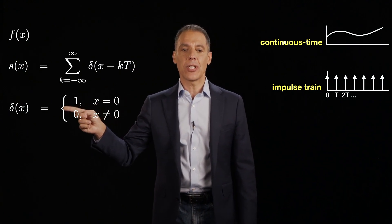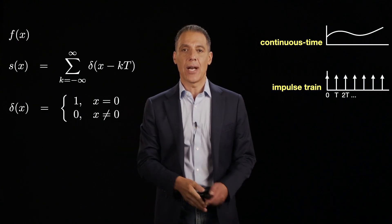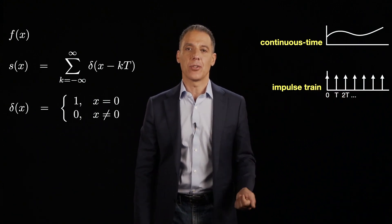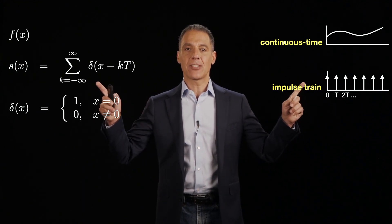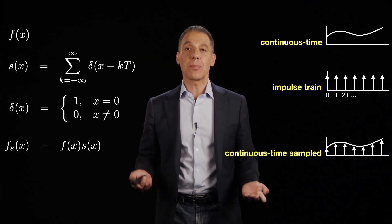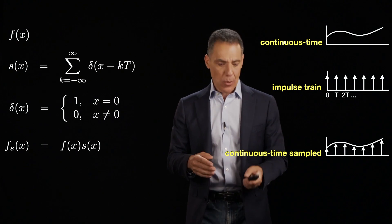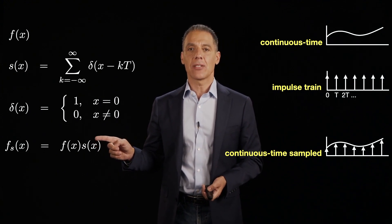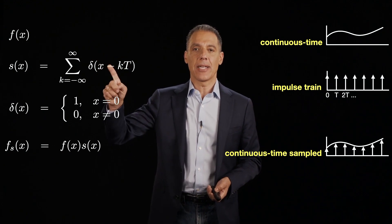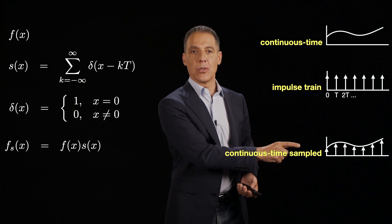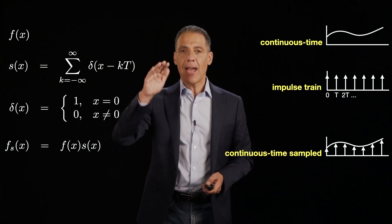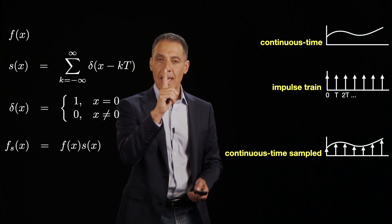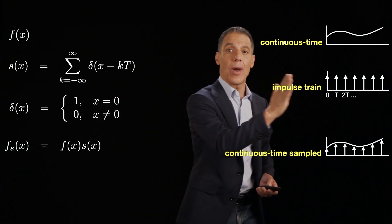Let's remind ourselves what the unit impulse is: it has a value of 1 when x is 0 and 0 everywhere else. The impulse train is a bunch of shifted impulses at points T, 2T, 3T, and all integer multiples. So we're going to take this impulse train — which I'll call S sub T, a bunch of scaled impulses — and multiply that by my signal. F sub S (S of course being sampled) equals F of x times S of x, where F of x is the continuous function and S of x is my impulse train. Notice, though, that everything here is still continuous. This impulse train is not discrete — it has a value of 1 at positions T, 2T, 3T and 0 everywhere else for all real values.